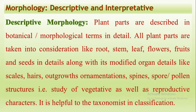What is meant by botanical terms or morphological terms? All plant parts are taken into consideration. For example, if we consider the root, the root may be tap root or it may be adventitious root. The stem — there are different types of stem. Or we can say different types of plants like herb, shrub, tree, under-tree, climber, etc.